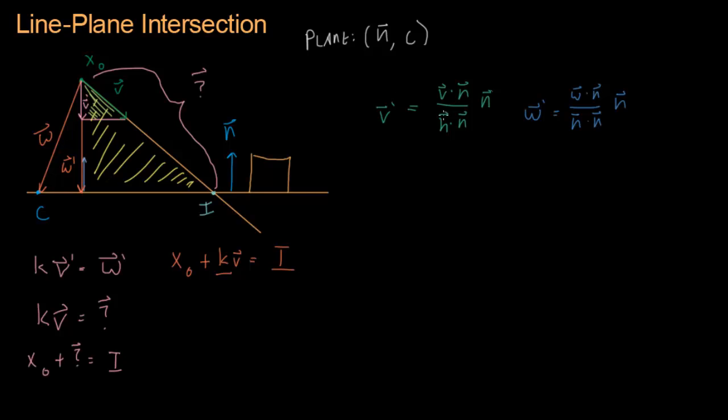And so we know what v prime is. We know what w prime is. And so I'm going to solve this equation for k by dividing both sides by v prime. Okay, and I'm going to write it down here. I'm going to get these two cancel out. I'm going to get k equals w prime over v prime. So let's write that. That'll be w prime is w·n over n·n times n over v·n over n·n times n. That equals k.